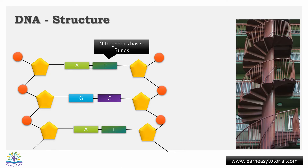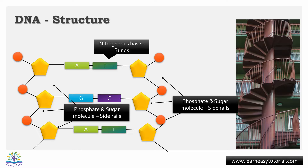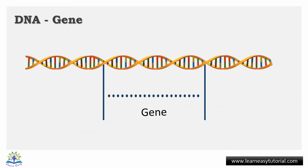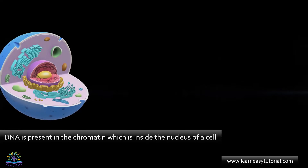Imagine DNA as a spiral staircase — the rungs of the staircase are made up of the nitrogenous bases, and the side rails are made up of phosphate and sugar molecules. A segment of this DNA with a specific sequence of nucleotides is known as a gene.